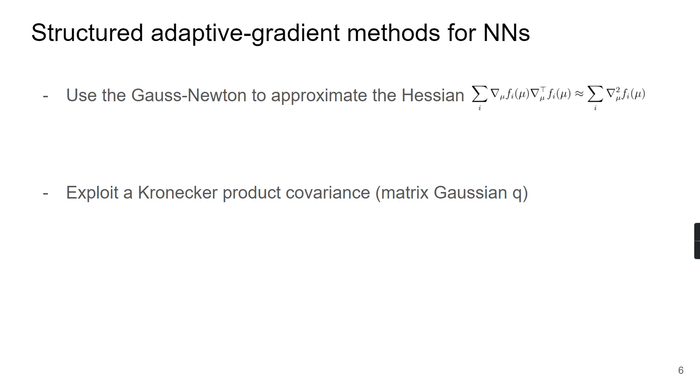Finally, I will briefly discuss how to obtain structure-adaptive methods for neural networks. To obtain a non-diagonal adaptive gradient method, we could approximate the Hessian by the Gauss-Newton and exploit a Kronecker product structure. Recall that we express the precision matrix S as a matrix product between B and B transpose, and B is a matrix group member. And if B is a Kronecker product of two group members C and D, we can show that B is also a valid group member. We call this group a Kronecker product group. And using these product groups, the precision matrix has a Kronecker product structure.